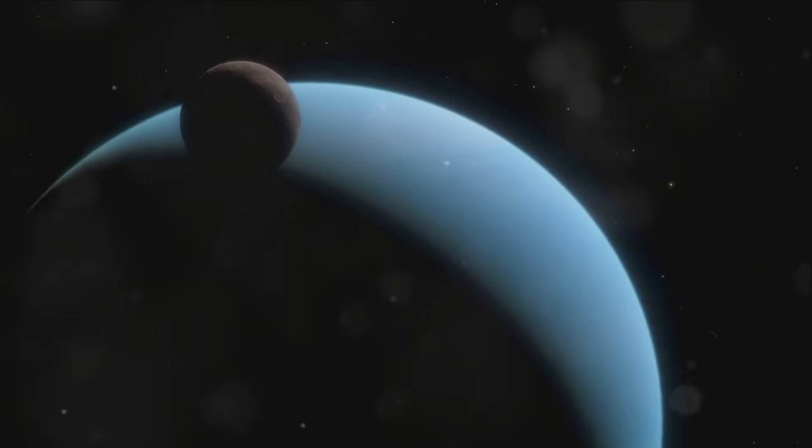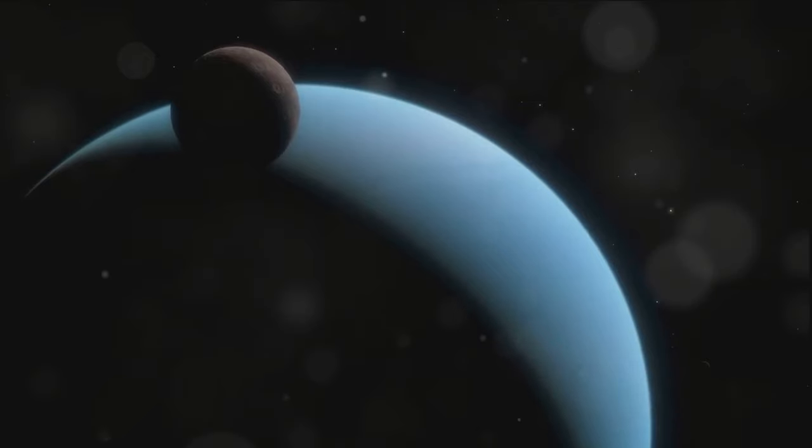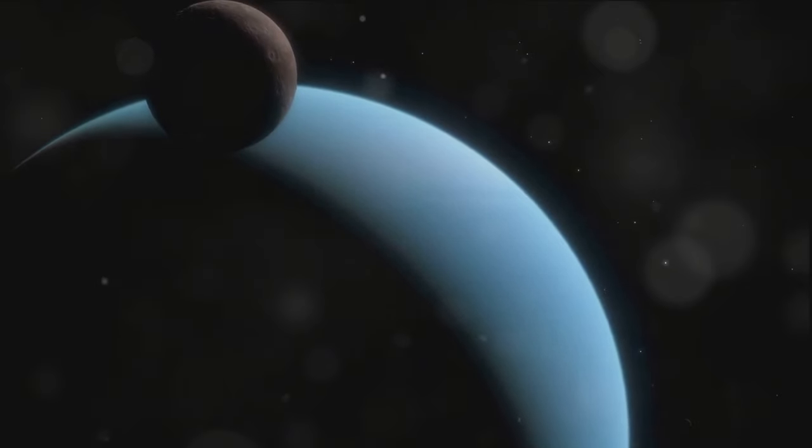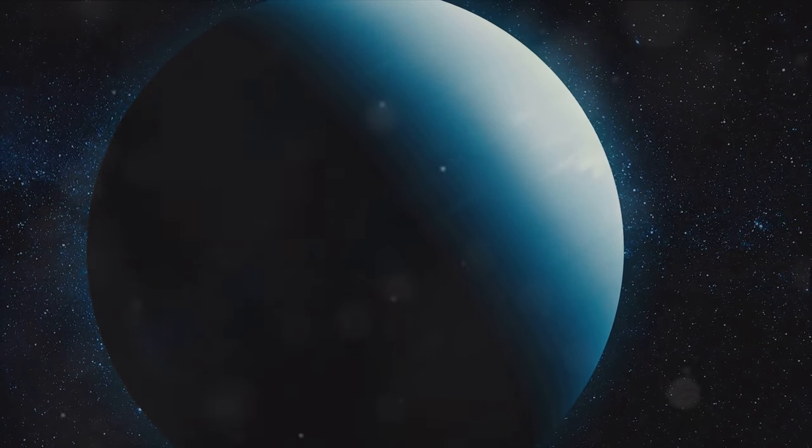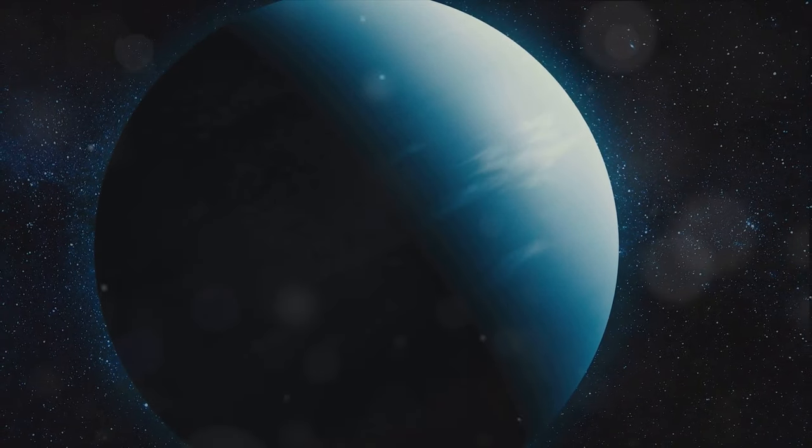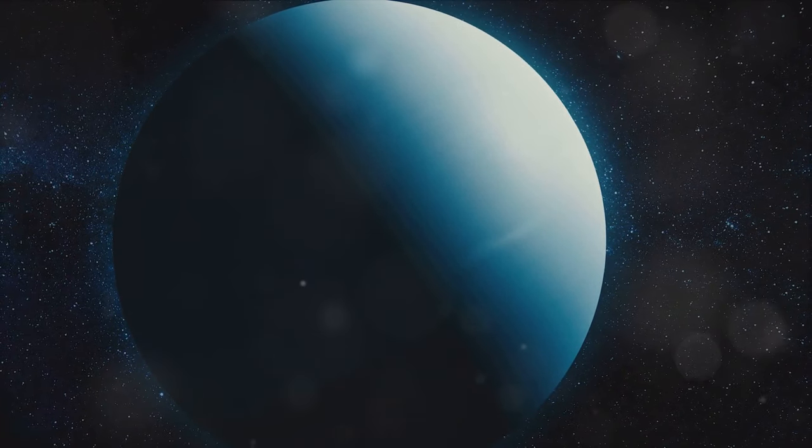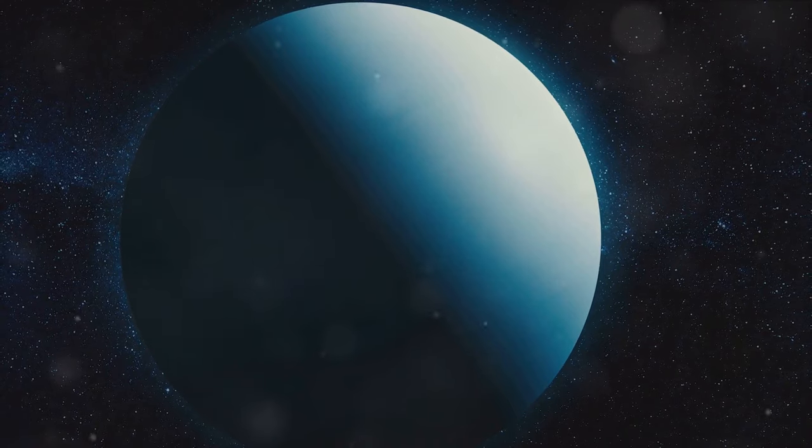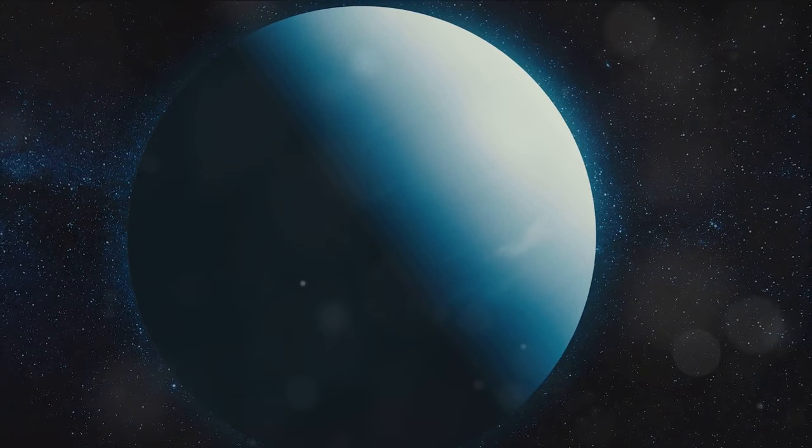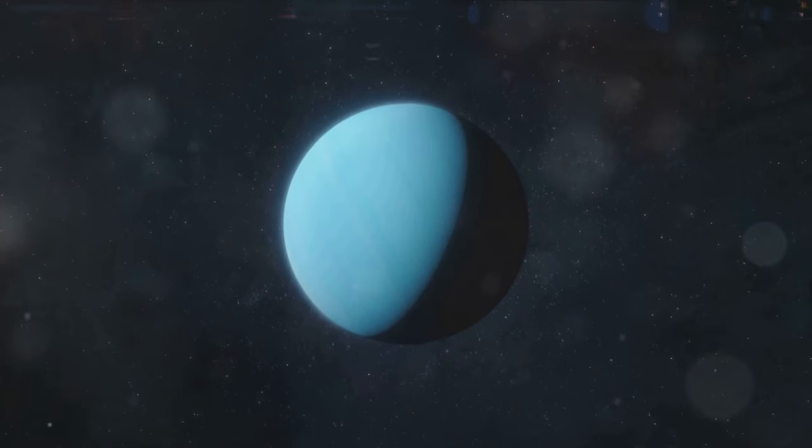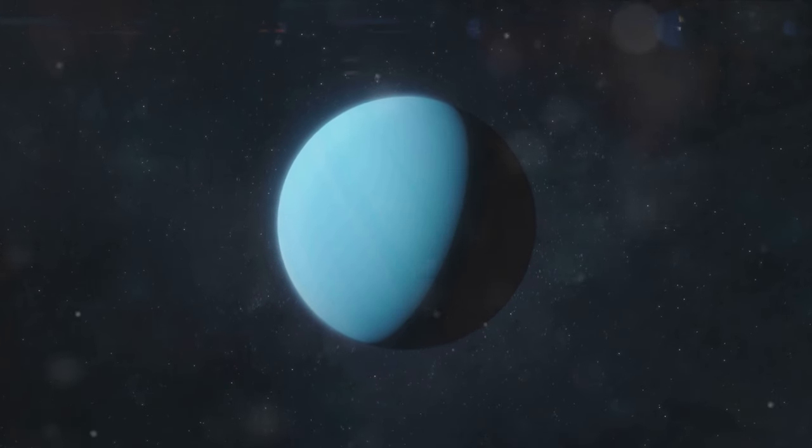The seventh planet from the sun, it is located just beyond the realm of Saturn. Its positioning in the solar system gives it a distinctive and enchanting aura. The celestial titan's name was derived from the ancient Greek deity Uranus, representing the sky's vast, boundless expanse. This association with the sprawling heavens is apt for a planet that exudes an air of profound mystery and grandeur.